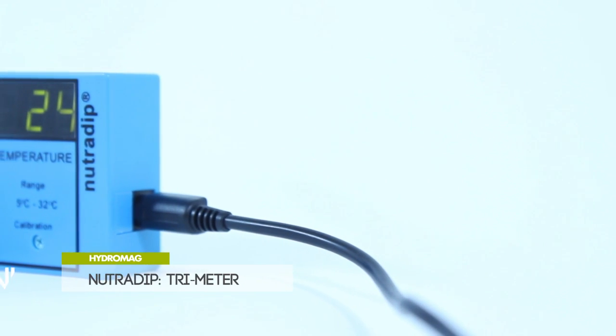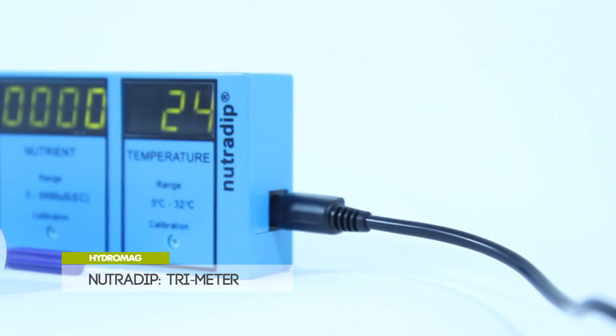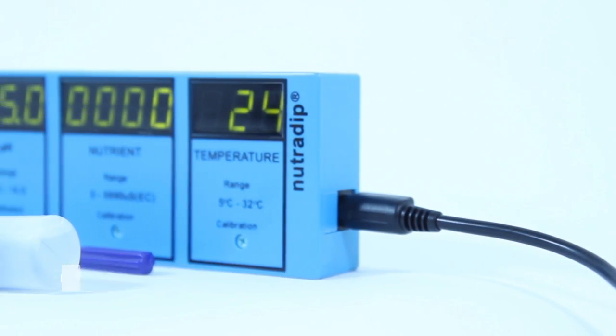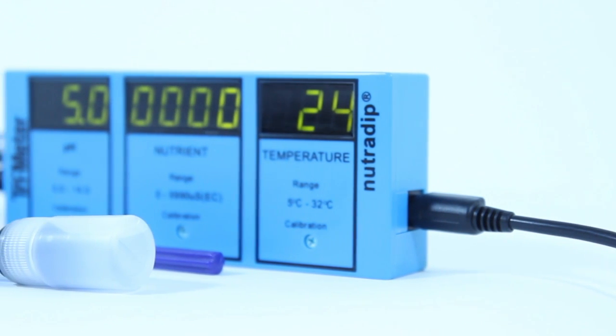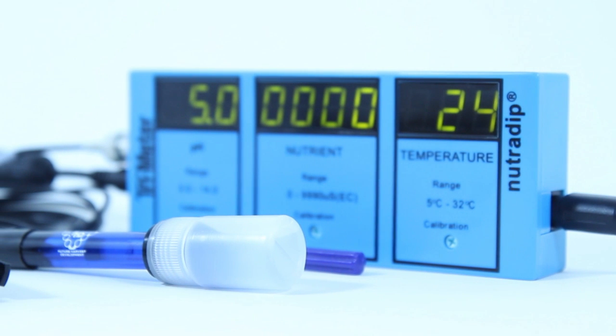The Trimeter from NutriDip is a three-in-one nutrient solution measuring device. Permanently situated in your reservoir, the Trimeter continuously measures the pH, EC, and temperature of the solution.